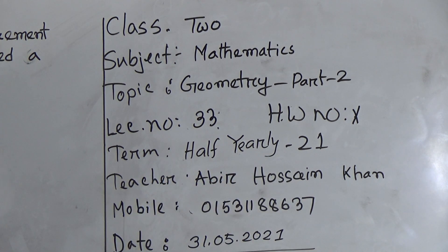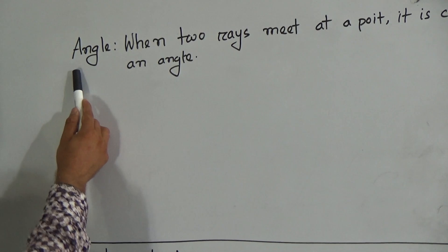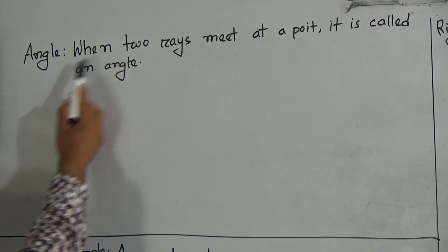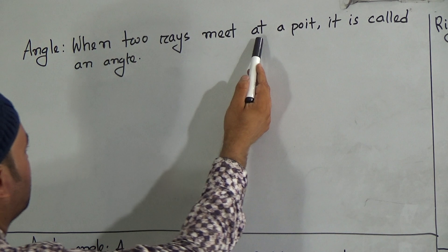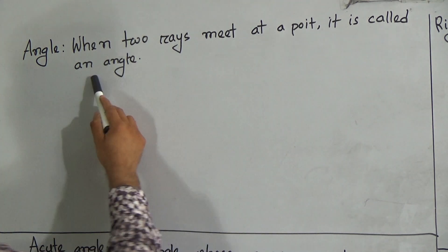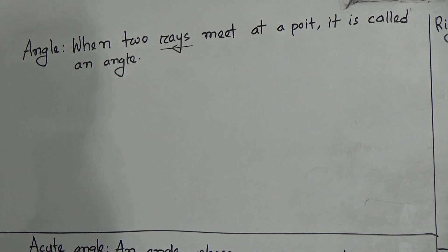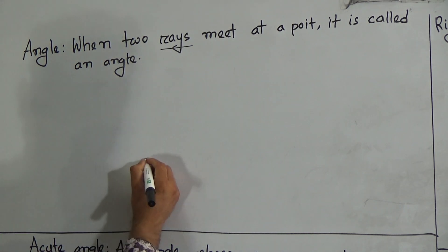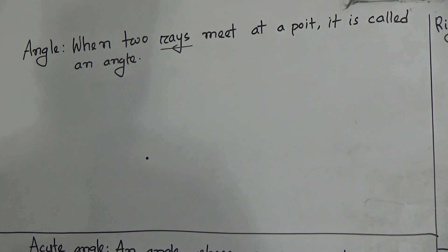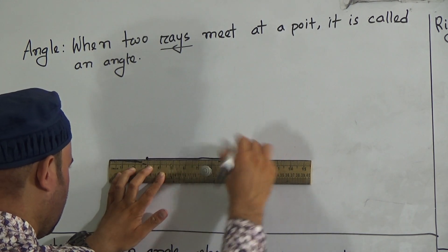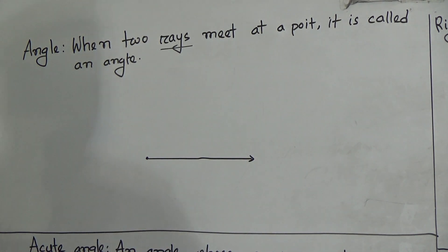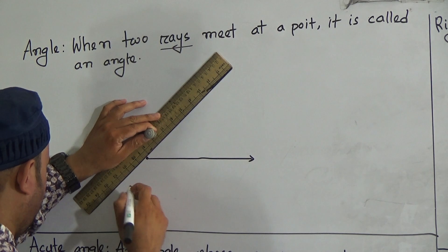Now my dear students, let's start our class. Here is the first definition, which is angle. When two rays meet at a point, it is called an angle. So here you have to draw two rays. We know that a ray has one ending point but no definite length. So here it is a ray.